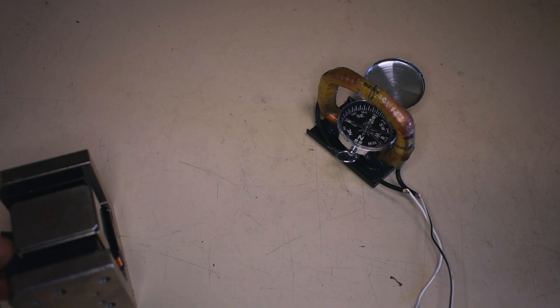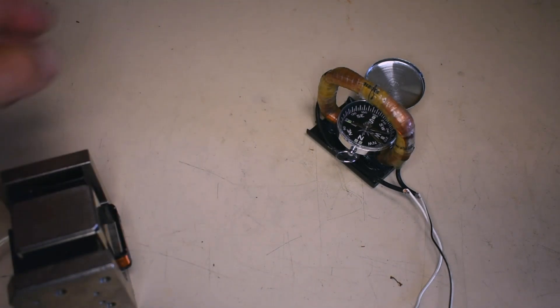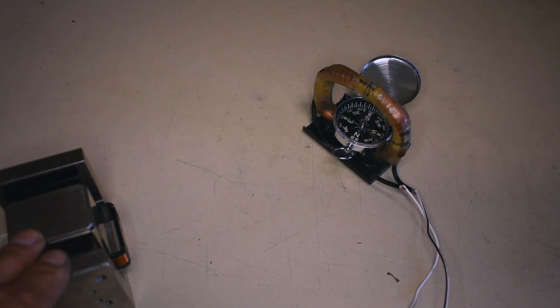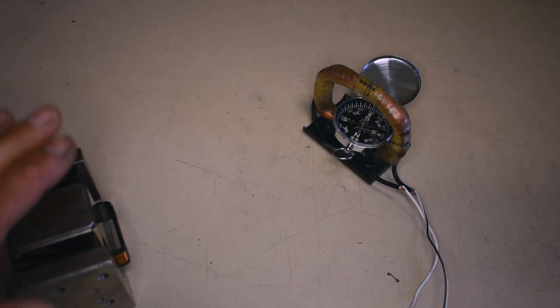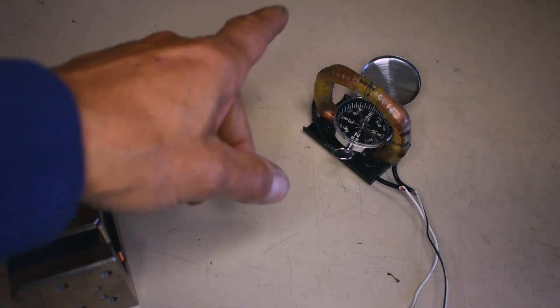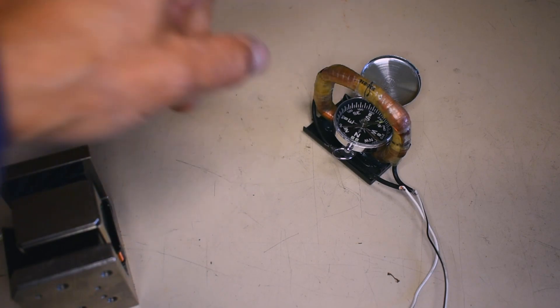If I move the coil in the first magnet here, watch what happens to the compass needle. See, the compass needle has moved just because I've moved the coil in this magnet. So we've generated current in this coil here, and we've created a magnetic field in this coil here.